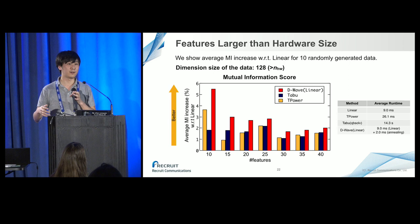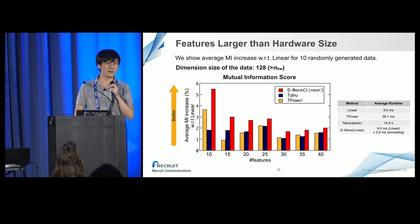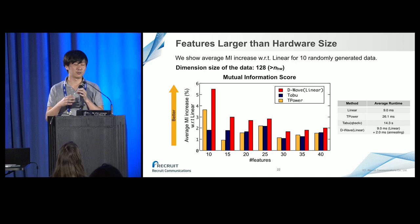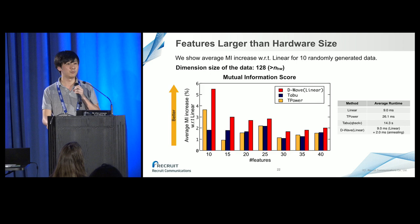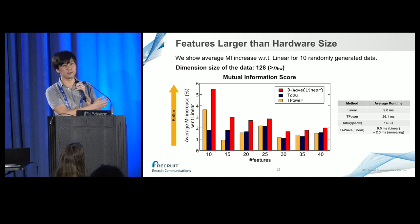Speaker: The dataset uses binary features, because we have to calculate the mutual information in advance, and if the features are continuous variables it's hard to calculate the mutual information. There is a technique to calculate mutual information for continuous variables, but for simplicity we used binary features in this case.